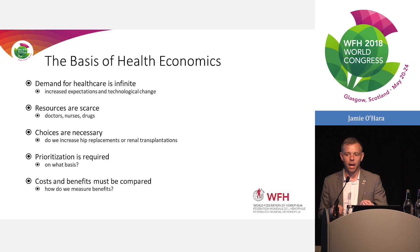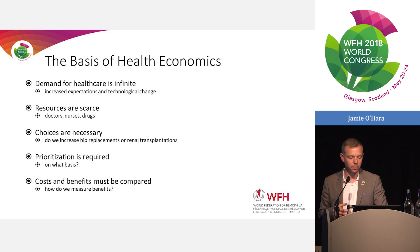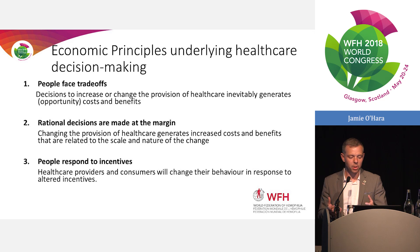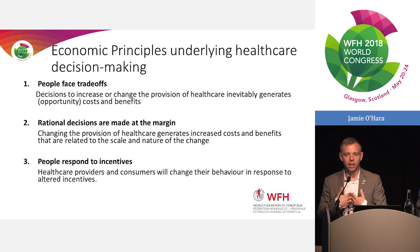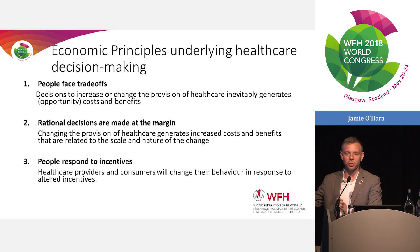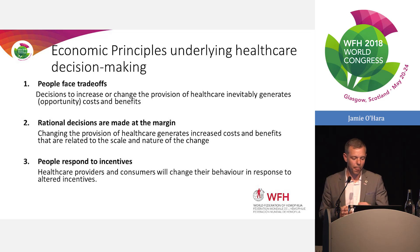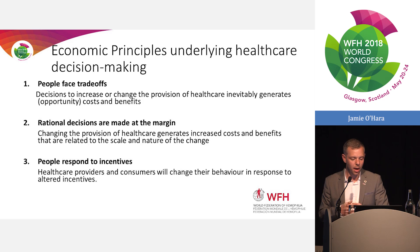So we've got to make choices as a society, and that's what this science tries to help us do. We need to find ways to prioritise and understand what the costs and benefits are of a particular intervention. For every haemophiliac treated, we face trade-offs - we are very expensive patients. It's a societal trade-off. We need to make rational decisions in the margin because some increments are bigger than others, and people respond to incentives, so we need to be aware of how markets behave.